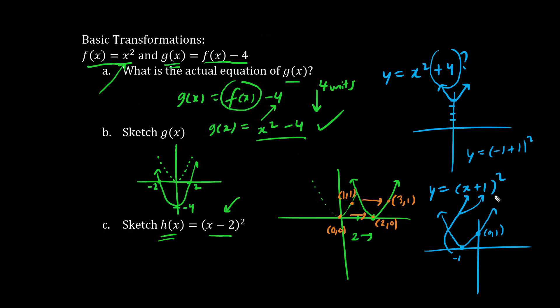In fact, we can even go 2 right, 4 up. 1, 2, 1, 2, 3, 4, and we have the point (1, 4).